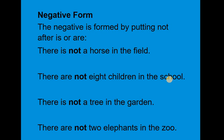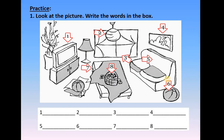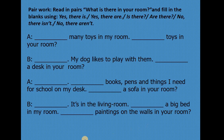Next, move on to the progress exercise. Have the students look at the picture and tell them to write the words in the box. You have items numbered one through eight.